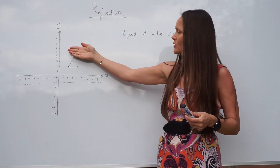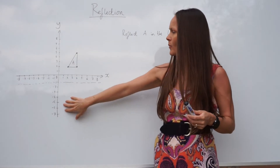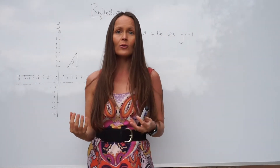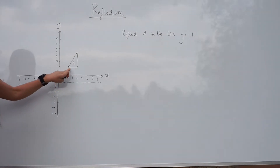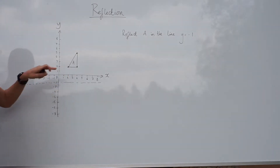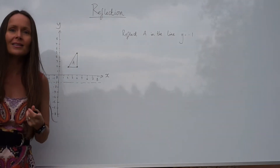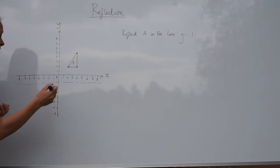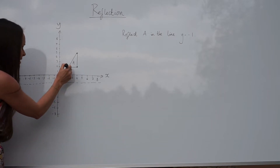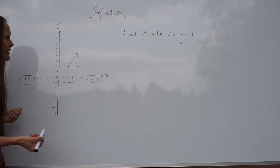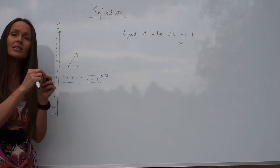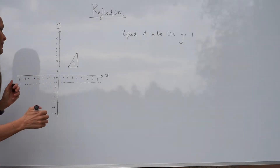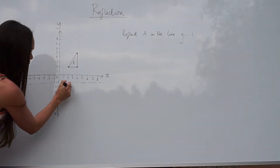The triangle is going to flip down here somewhere. Just like before, choose one of the points on your triangle — I'm going to choose the bottom left-hand corner again — and count how many units that point is away from the mirror line. You should be able to see this time the point is one, two, three units from the mirror line. So the new reflected point will be three units below the mirror line, in line with the previous point.